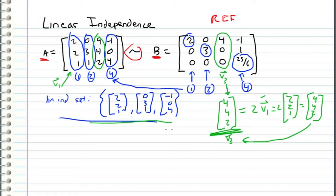So the procedure is: if we want to determine the linearly independent set of vectors, we row reduce, find the pivot columns, and take those corresponding pivot columns of the original matrix as the linearly independent set.